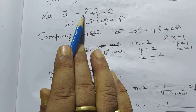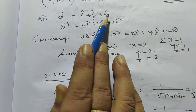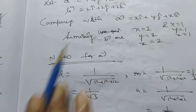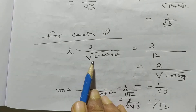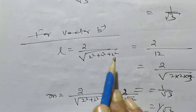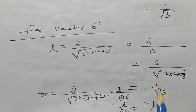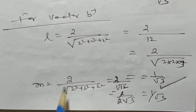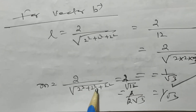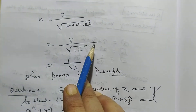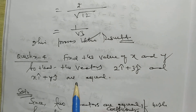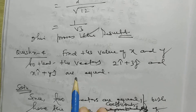For vector b with coefficients 2, 2, 2: l = 2/√(2²+2²+2²) = 2/√12 = 1/√3. Similarly, m = 1/√3 and n = 1/√3. This proves the result — both vectors share the same direction cosines. In this way, we can also get an infinite number of vectors with the same direction. A multiple-type question may be asked, so you must know this concept.